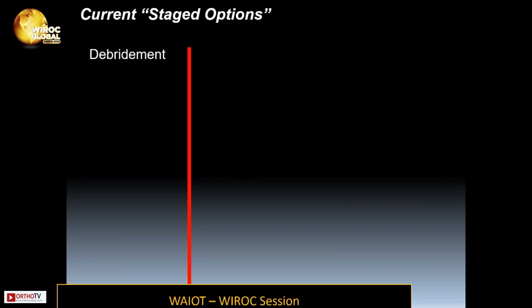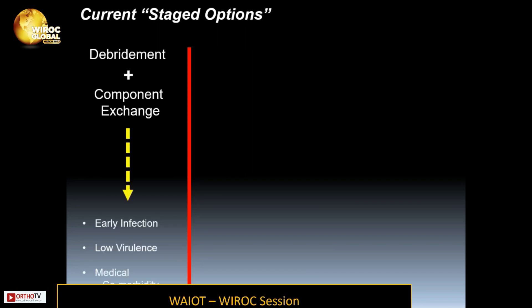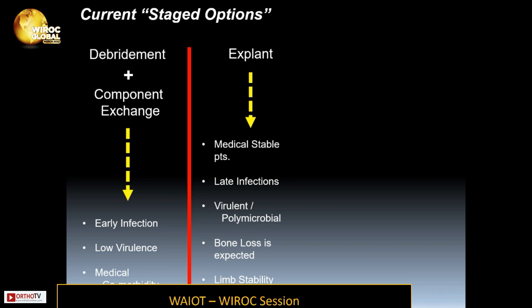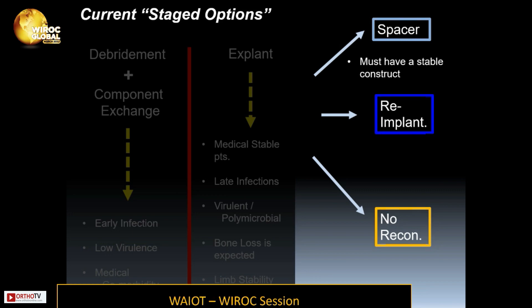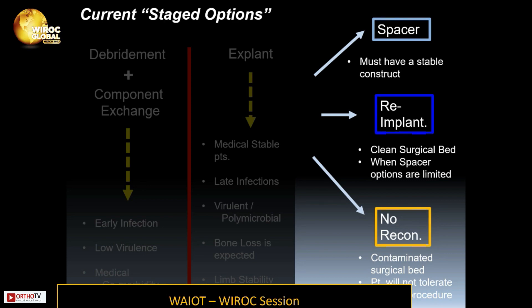The current stage options include debridement and component exchange, performed in patients with early infections of low virulence and medical comorbidities. An explant can be performed in medically stable patients with late infections involving a virulent polymicrobial organism, expected bone loss, and necessary limb stability. Following explant, a spacer, re-implantation, or no reconstruction can be chosen. Spacers must have a stable construct; re-implantation requires a clean surgical bed; and no reconstruction is performed in grossly contaminated beds or when patients cannot tolerate another procedure.